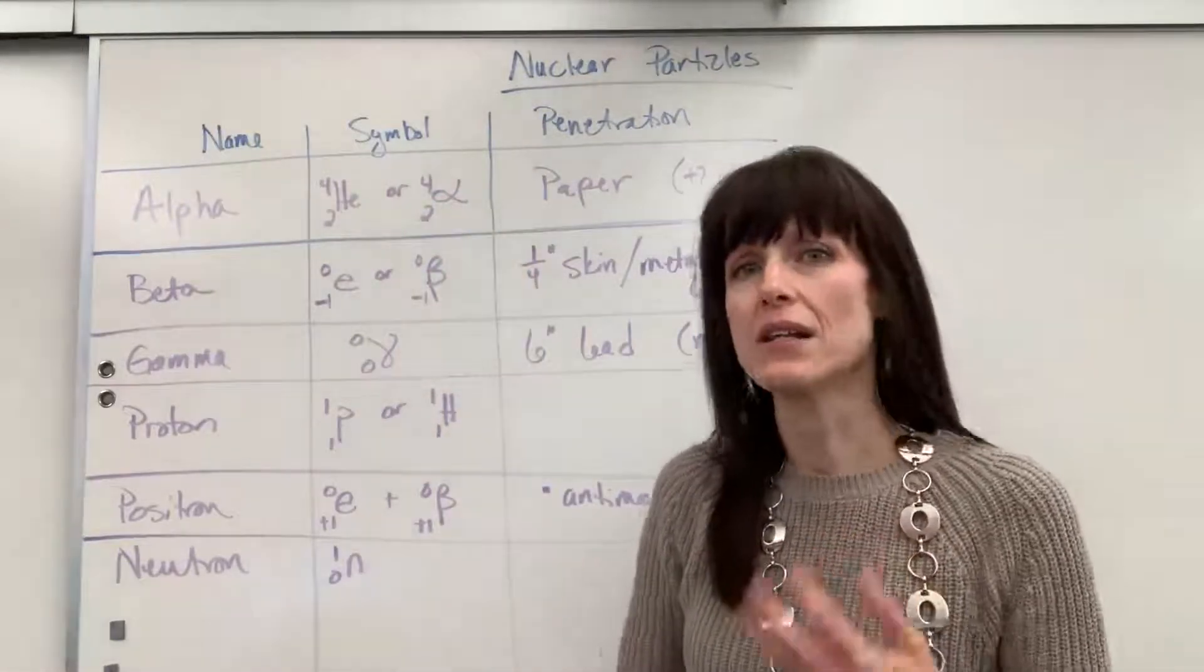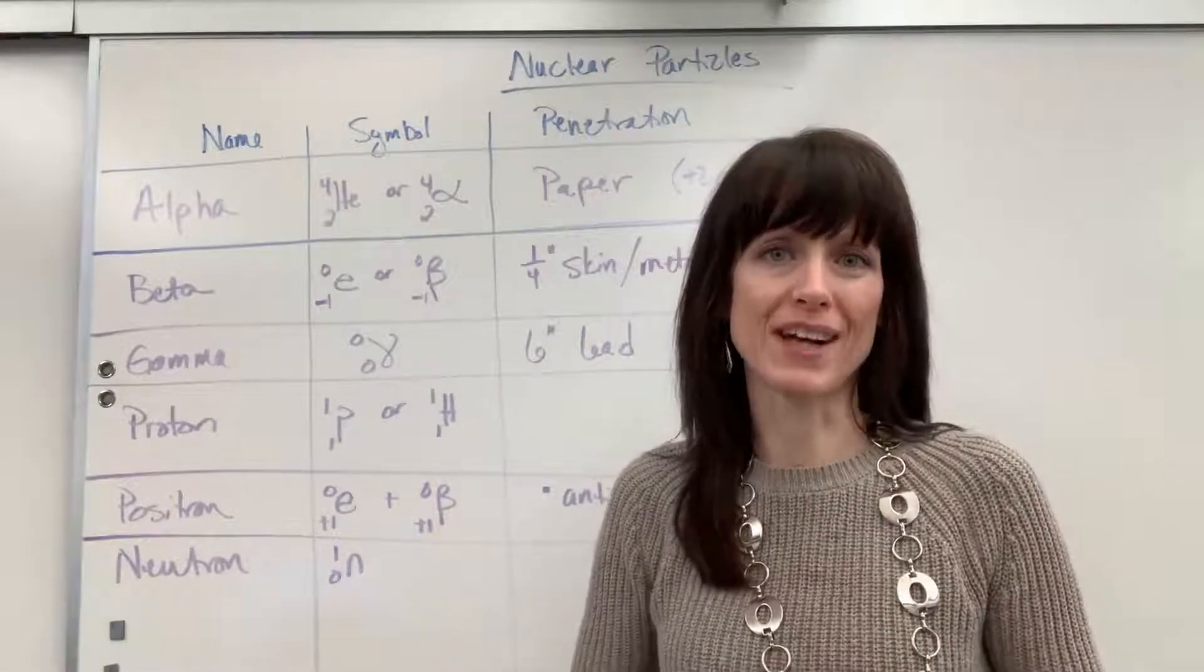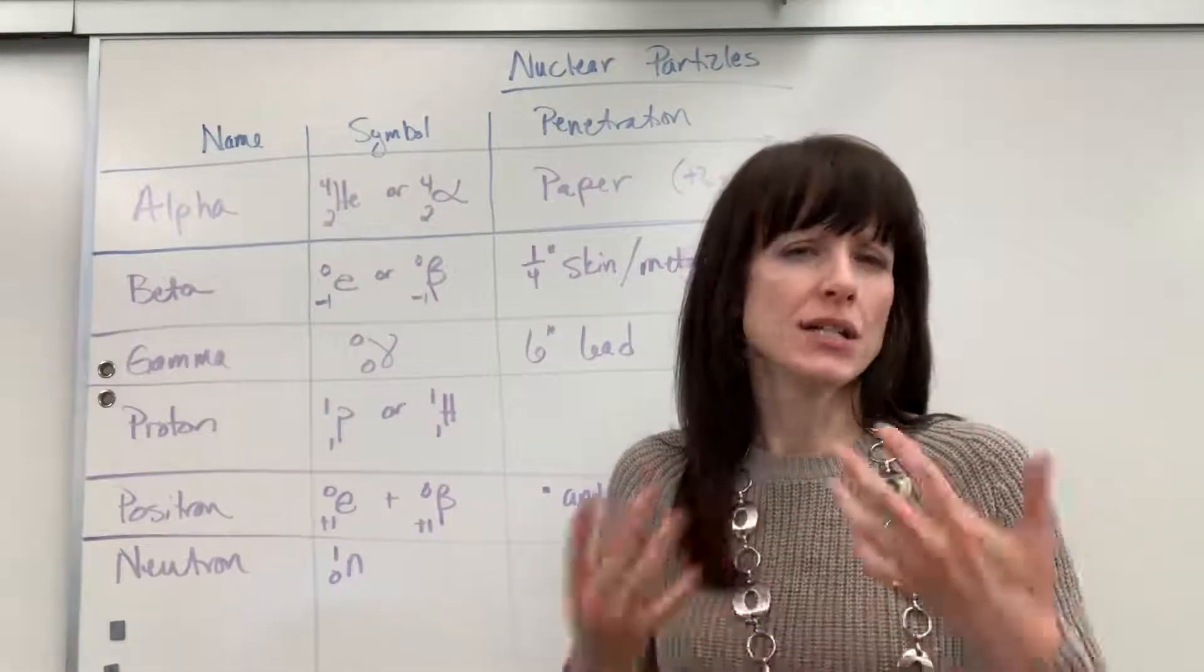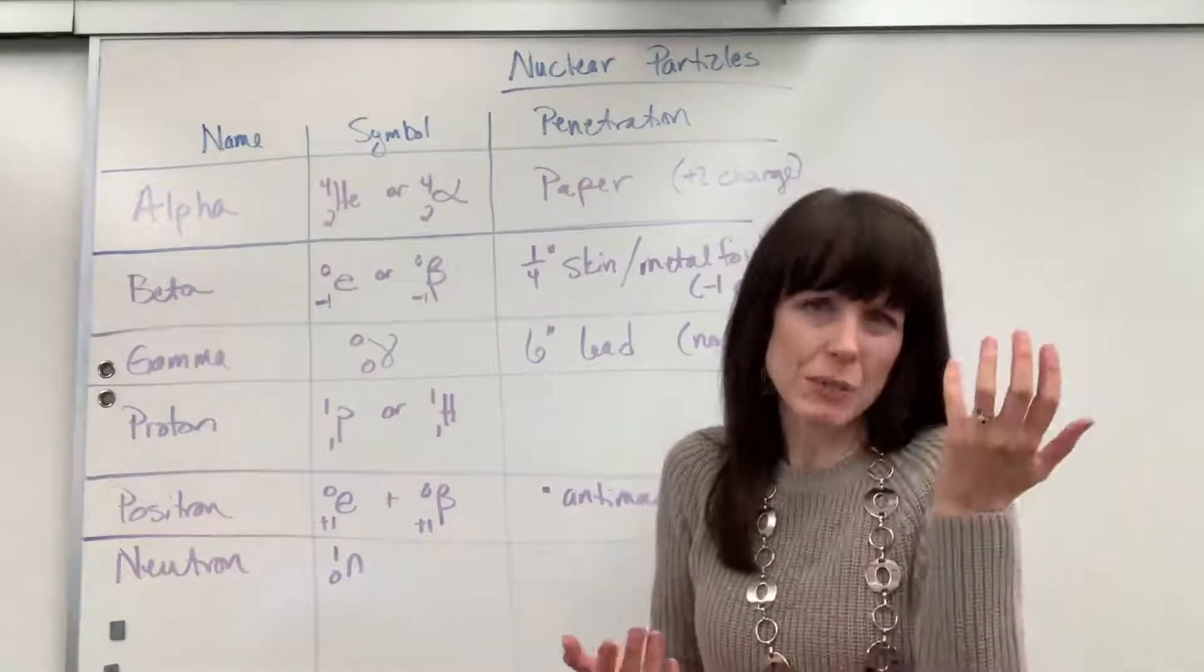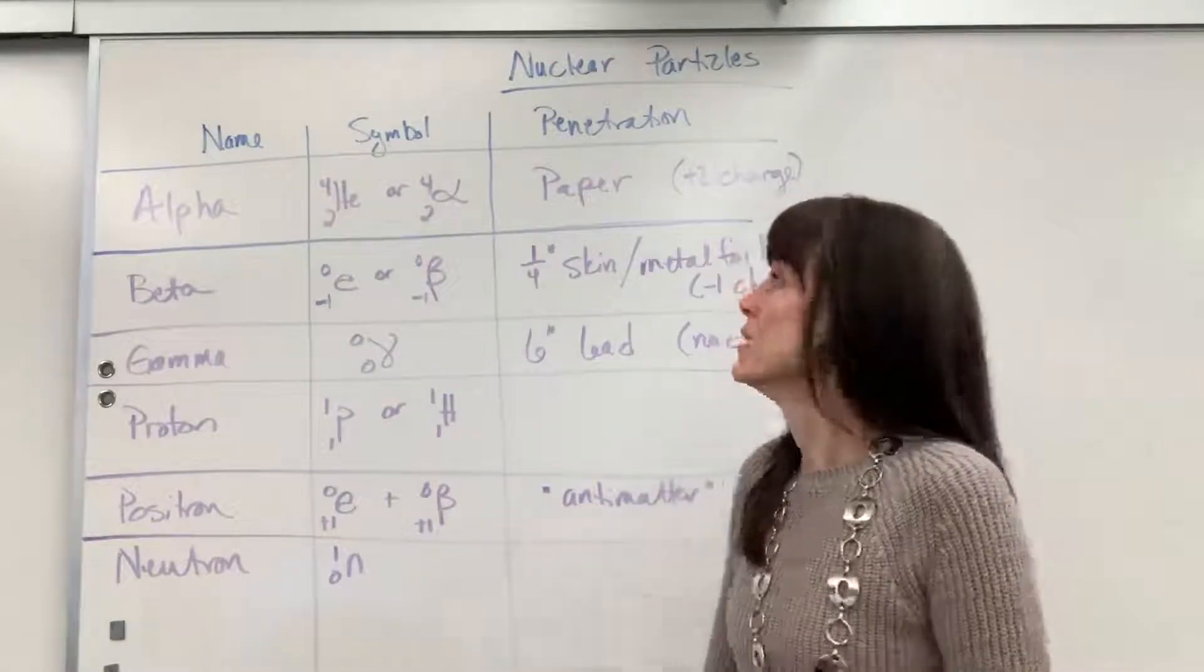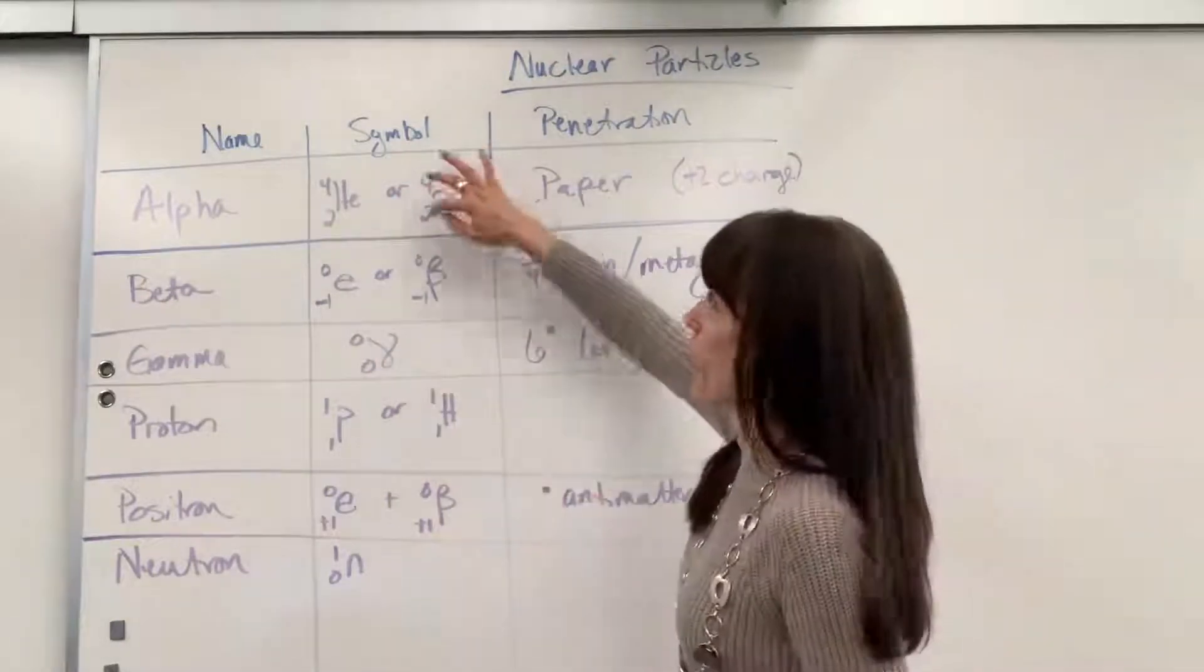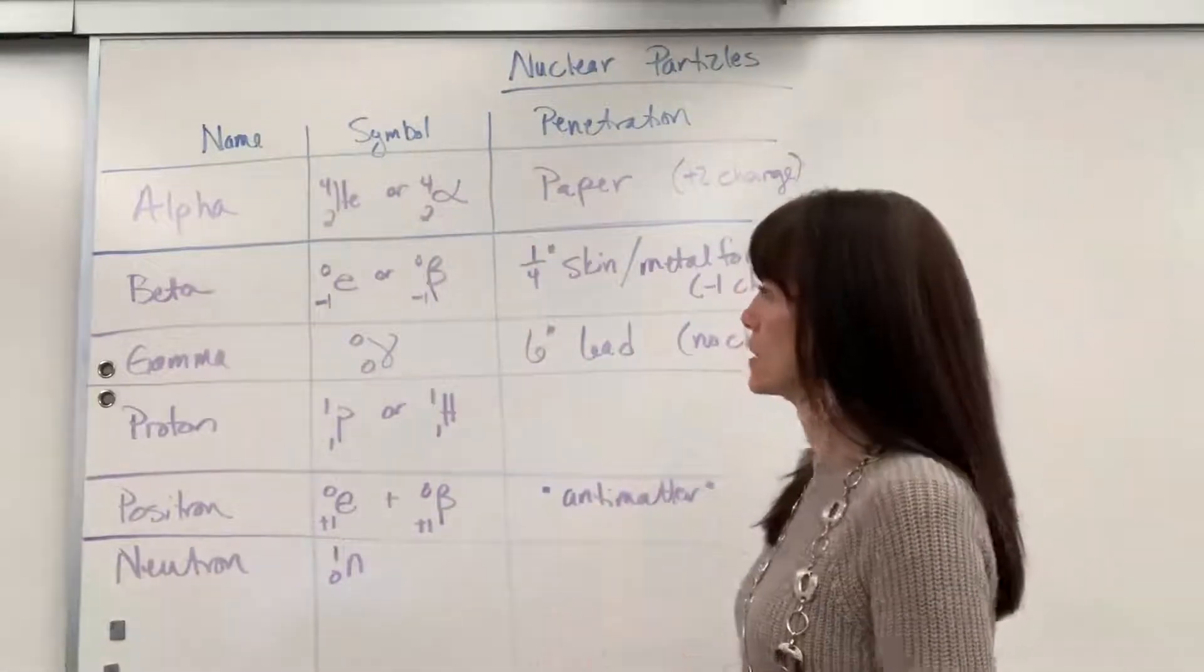I like to write the atomic number and mass number, especially when we're balancing chemical reactions, or excuse me, nuclear reactions. It just makes the math a little bit easier. You don't have to keep it in your head. It's there in front of you. So I write down the isotope form with the mass number and atomic number.